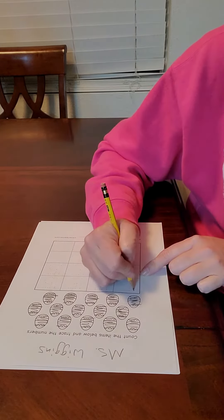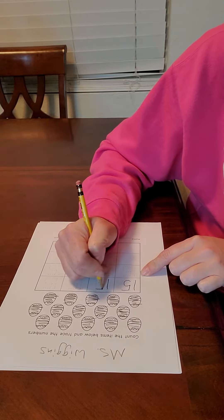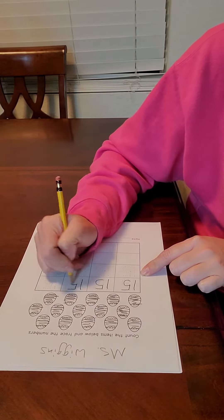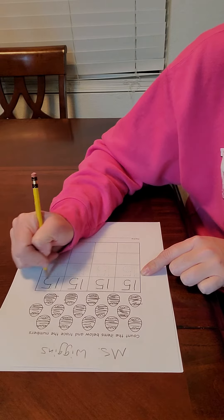And then we're going to trace our 15s. It's a 1 and a 5 right next to each other. So go ahead and trace all those 15s.